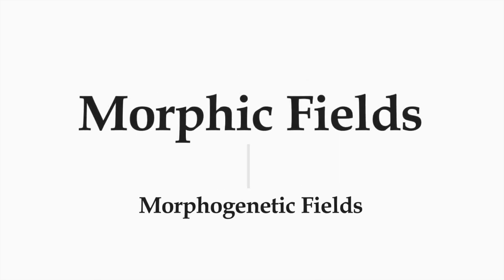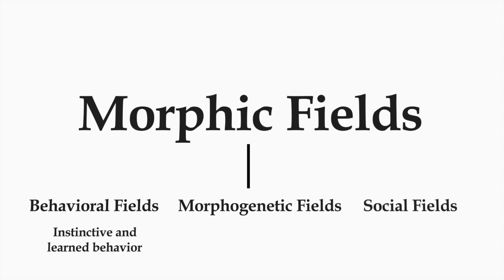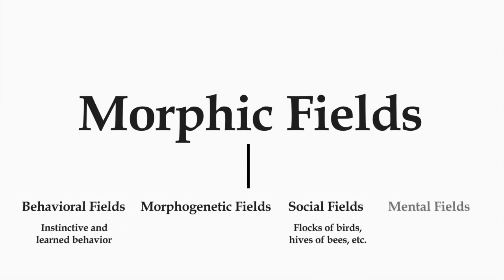Morphic fields is the genus and morphogenetic fields are one species of morphic field. Other species of morphic field include behavioral fields, which underlie instinctive and learned behavior in animals and humans; social fields, which underlie the organization of social groups like flocks of birds or hives of bees or human families or football teams; and mental fields, which underlie mental activity. All of these are different kinds of morphic field.